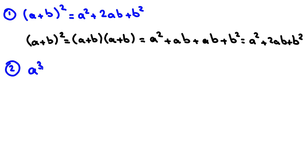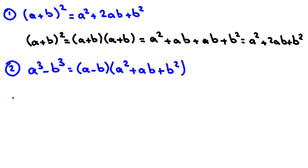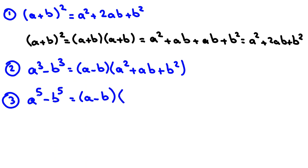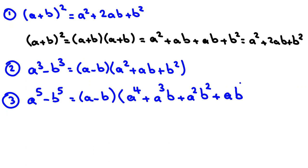The second identity is: a cubed minus b cubed equals (a minus b)(a squared plus ab plus b squared). The third identity is: a to the 5th minus b to the 5th equals (a minus b)(a to the 4th plus a cubed·b plus a squared·b squared plus a·b cubed plus b to the 4th). In general, for a to the n minus b to the n, you write (a minus b) and decrease the power of a by 1 while increasing the power of b by 1 at each step. For this video we only need the identities for n=3 and n=5.